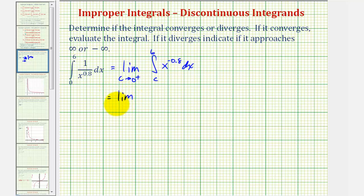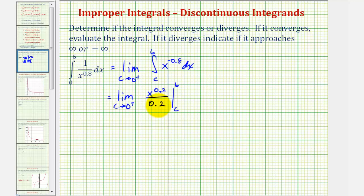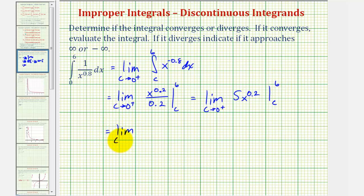So we'll have the limit as c approaches zero from the right. Applying the power rule of integration, we would have x to the power of negative 0.8 plus one, that would be x to the power of 0.2 divided by 0.2, with lower limit c and upper limit six. Notice how 0.2 in the denominator is two-tenths or one-fifth, so dividing by one-fifth is the same as multiplying by five. So we can write this as the limit as c approaches zero from the right of five times x to the power of 0.2, giving us five times six to the 0.2 minus five times c to the 0.2.